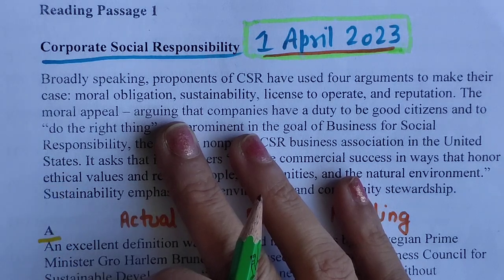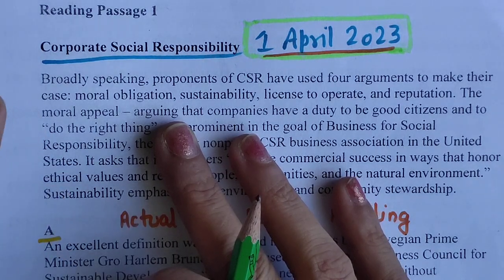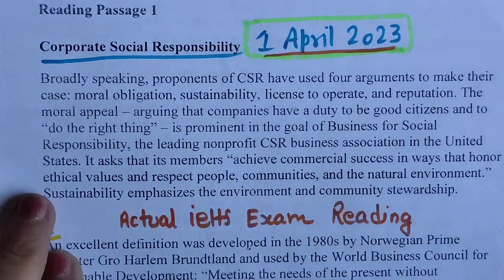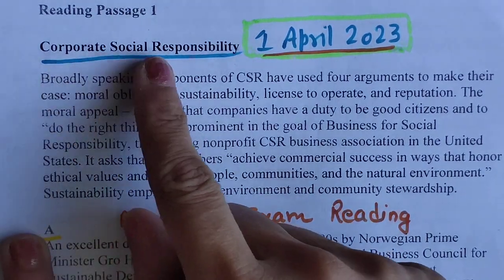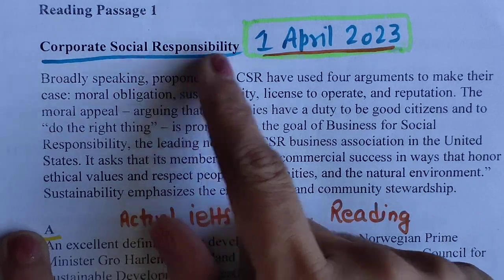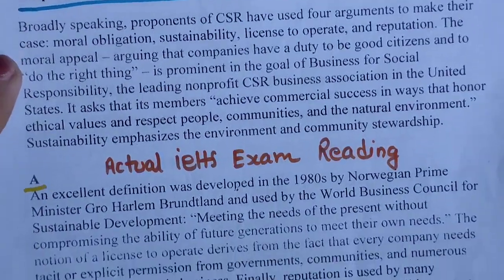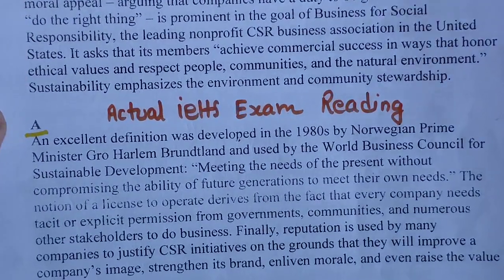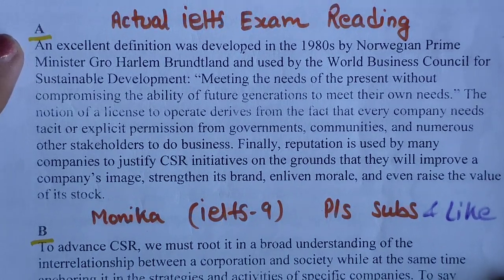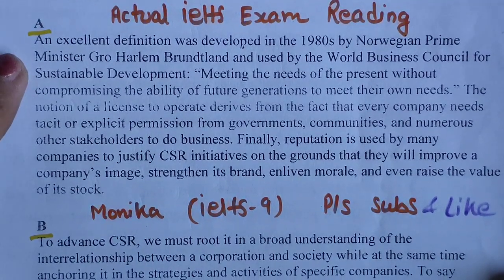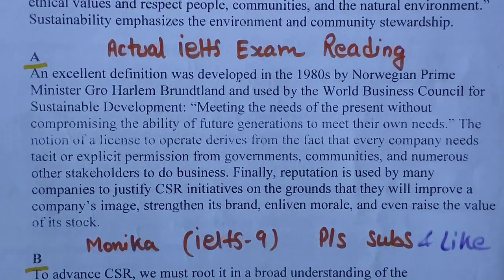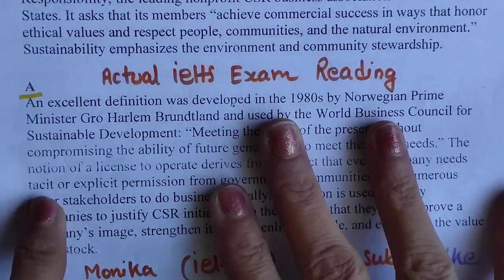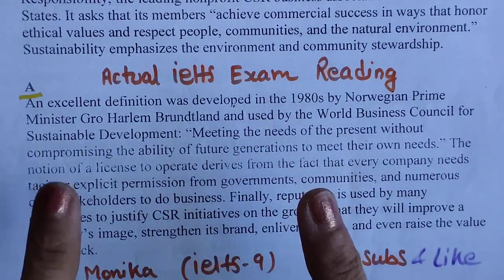Those who are not getting above 5.5, please watch this video and you will see some difference. After that, please practice another reading passage and you will find some difference in your practice. Let's start. The title is Corporate Social Responsibility. You can see the paragraphs are named in alphabets — A, B, and so on. Let's go to the type of questions.